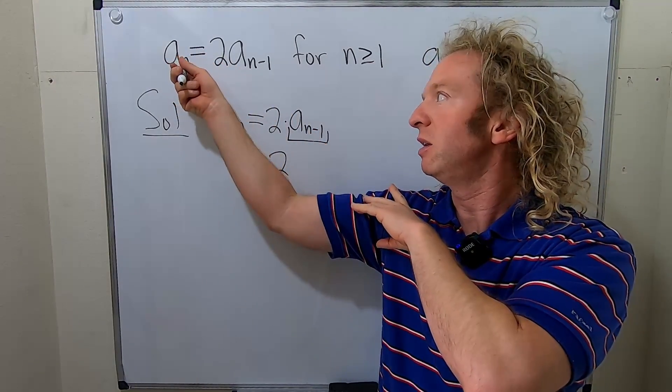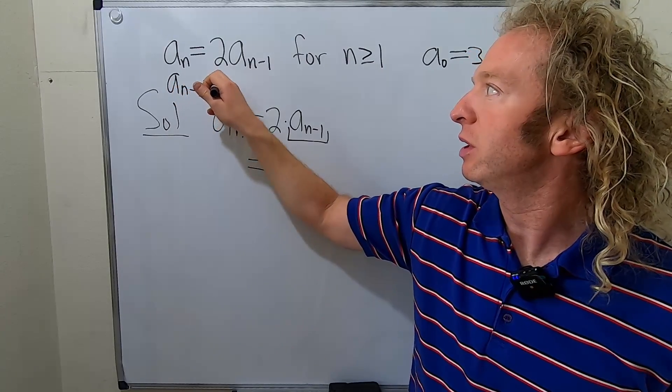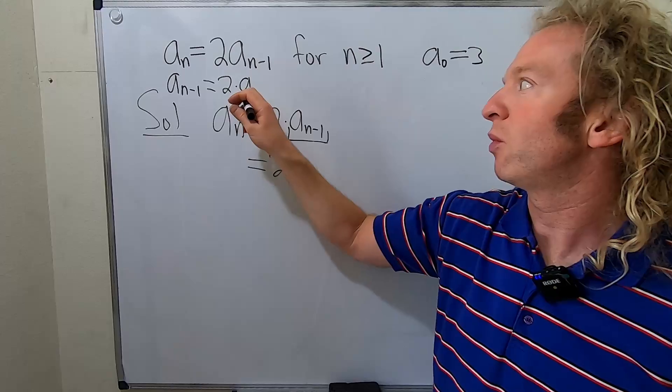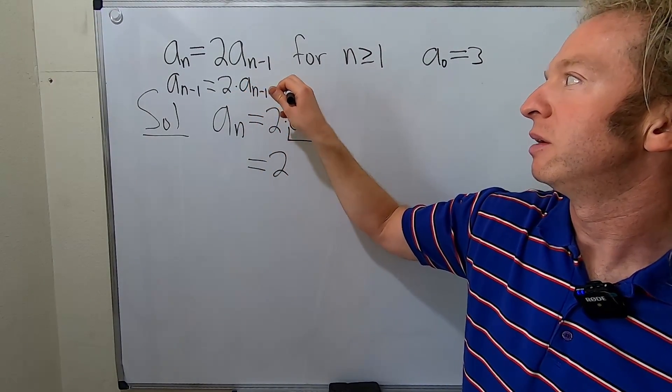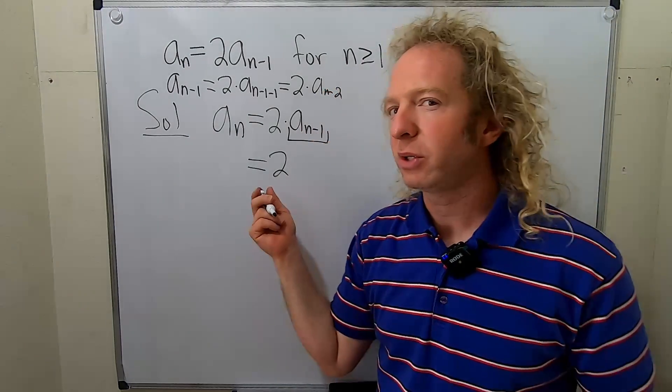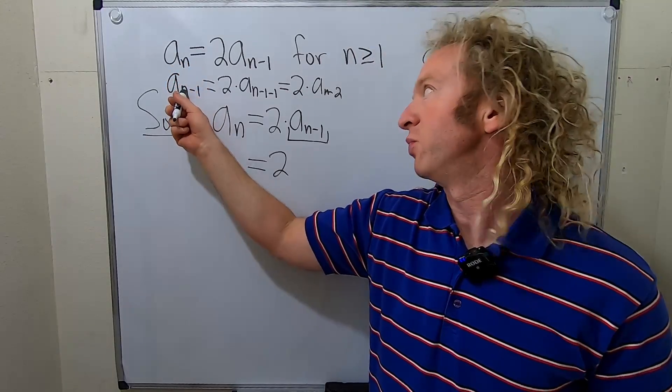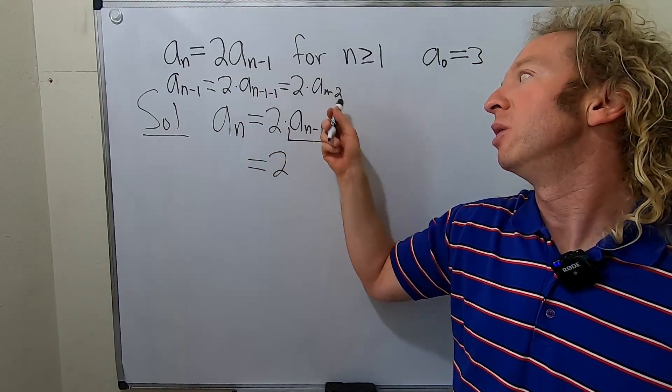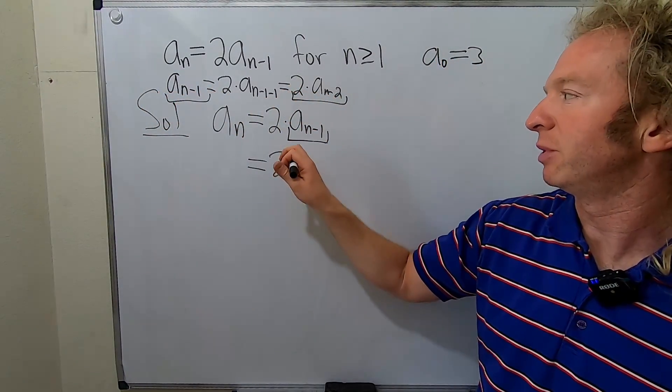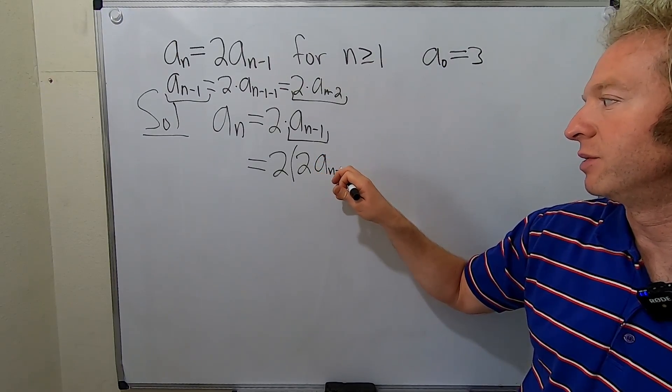So you replace n here with n minus 1. So when you do that, you get 2 times a, and then replacing n with n minus 1, it's n minus 1 minus 1. So that's 2 times a_{n-2}. You could do it in your head, but I figured I'd show you the work for the first example. So replace n with n minus 1, that becomes n minus 1 minus 1, which is n minus 2. So we just simply replace it: 2a_{n-2}.